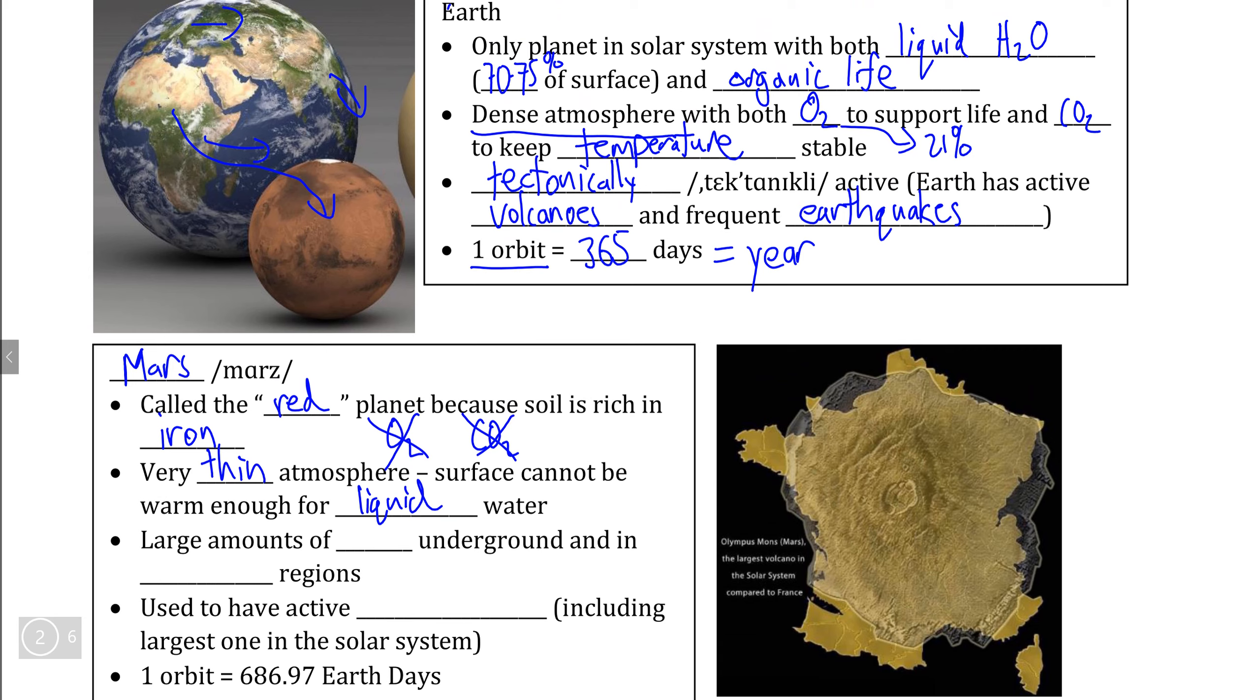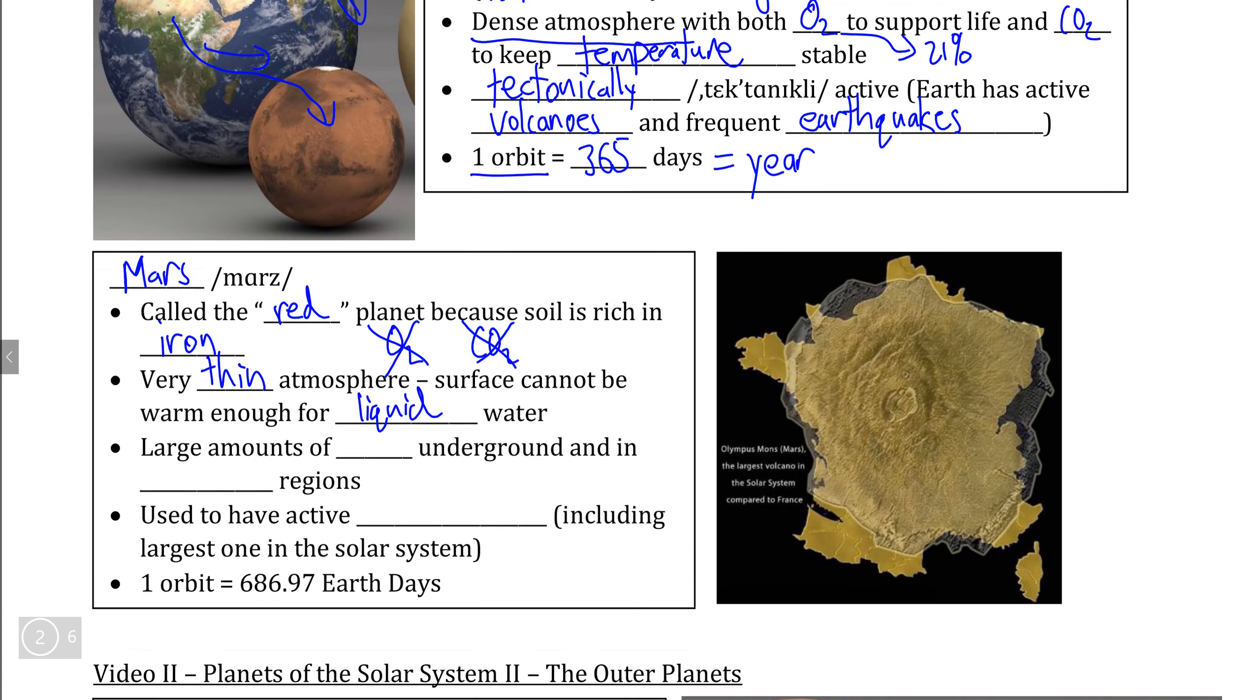The reason why Mars is famous as a potential colonization destination is even though we don't have liquid water, there is lots of water that exists on Mars in the form of solid ice, both underground, under the surface of Mars, and in the ice caps in the polar regions at the north and south end of the planet.